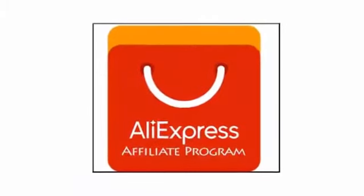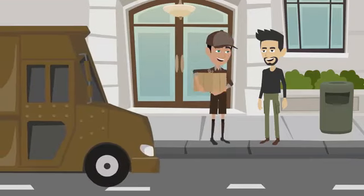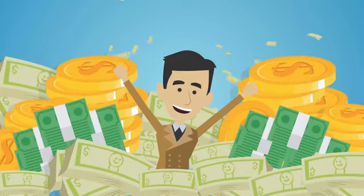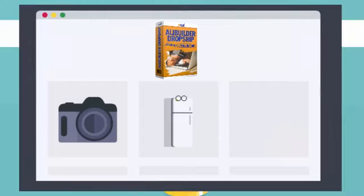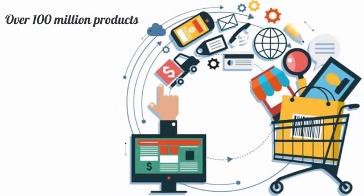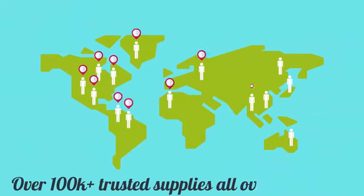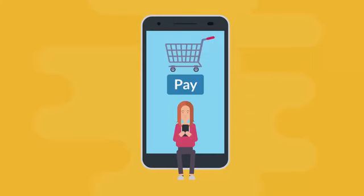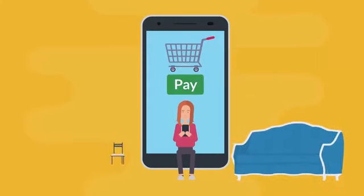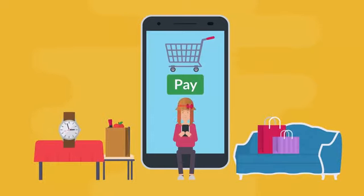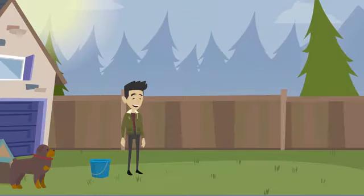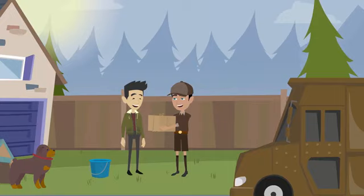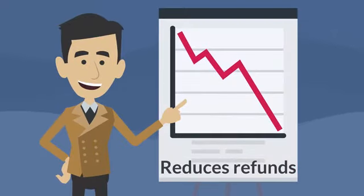Choose whether you want to use the AliExpress affiliate program or make even more money by dropshipping products from AliExpress and keep 100% of the profit for yourself. With OliBuilder, you can use the product search feature to find products on AliExpress that make you up to a 2,000% profit margin. There are over 100 million products available for import from over 100,000-plus trusted suppliers all over the world, and you can filter by almost anything, including whether or not the product offers ePacket as a shipping option.